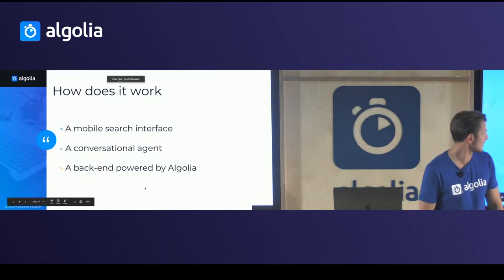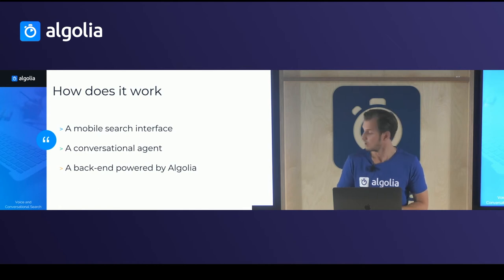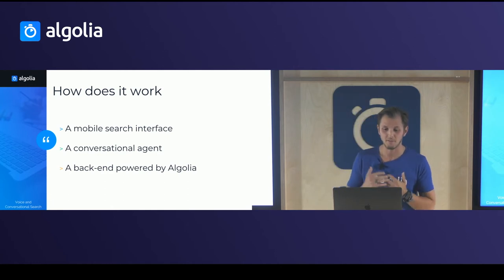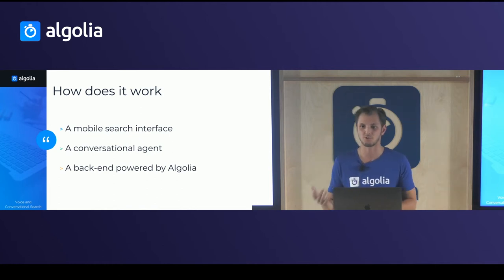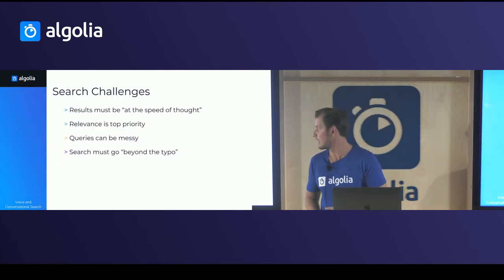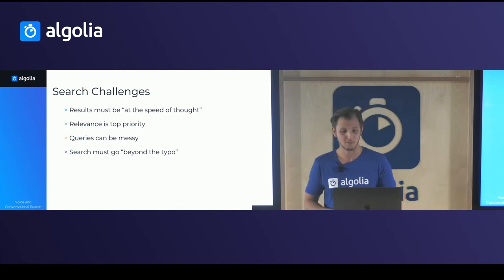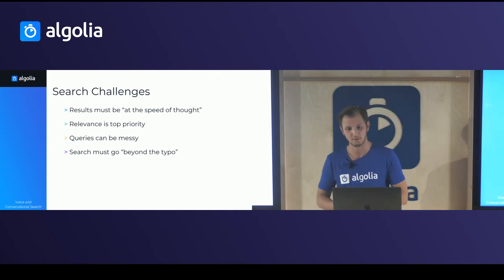Now let's talk about how it actually works. There are three main components: the mobile interface, a conversational agent that understands what's going on and what I'm saying, and a backend powered by Algolia to do the search on entities. Why is this more challenging than regular search? First, you need to be fast — you need to keep the conversation flowing. Second, you need to be relevant, because the first results matter most.